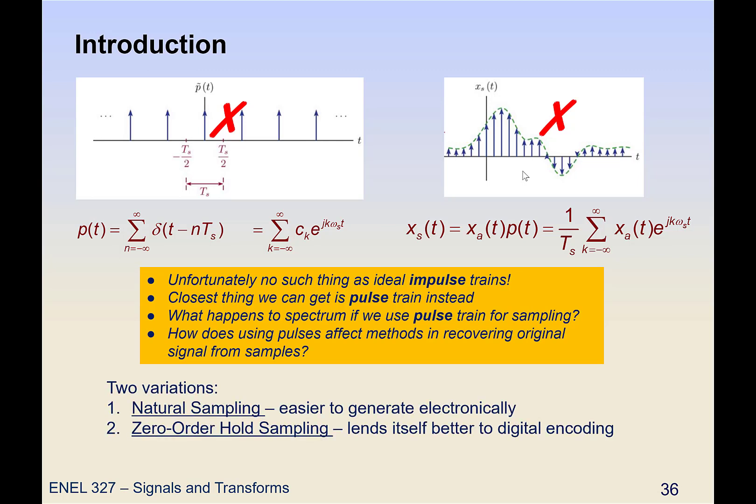And we're going to look at two different variations. The first is called natural sampling, which is actually easier to generate electronically. But then there's also zero order hold sampling, which lends itself better to digital encoding.